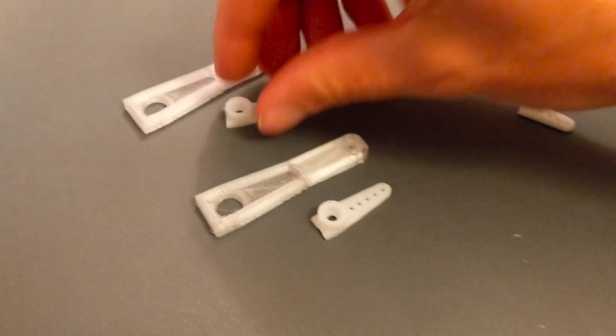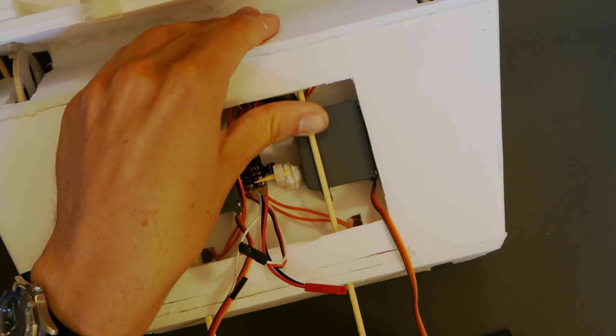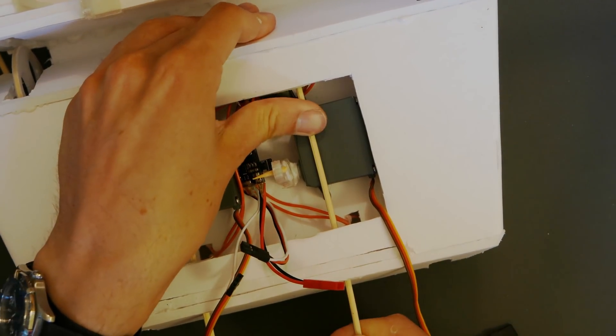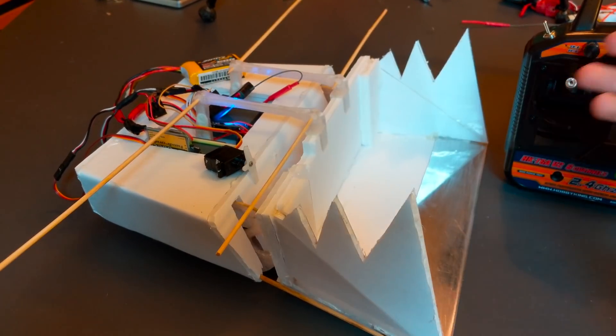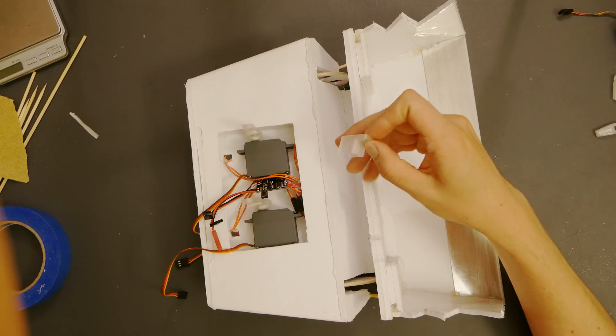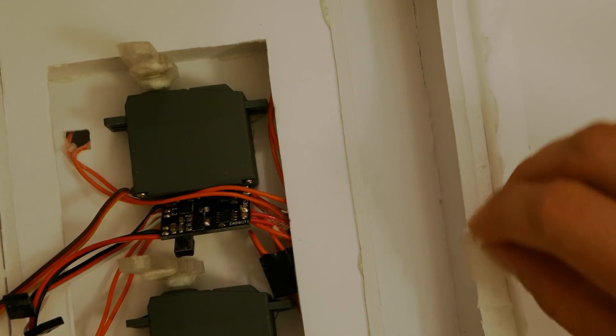In order to get enough travel, I extended the servo horns with these little 3D printed pieces here. And after securing the servos with some more bamboo skewers, I have 3D printed linkages to run between the servos and the dust pan. And here's a close-up of the little link that attaches the dust pan that lets the servo pull the dust pan upwards.